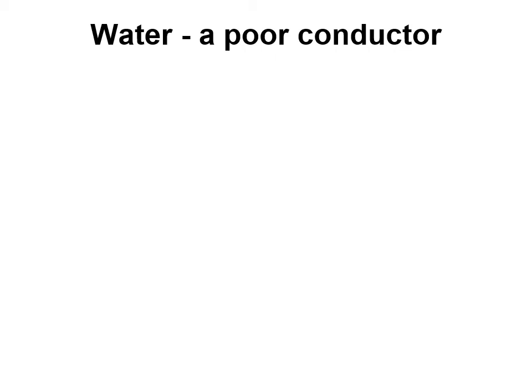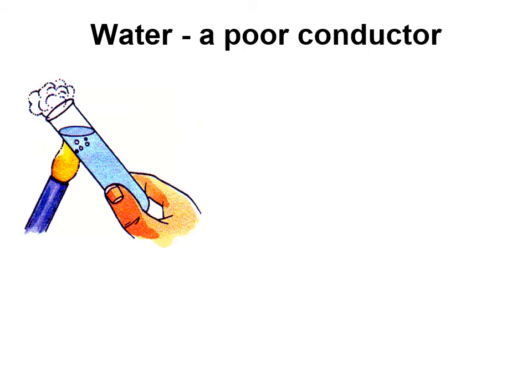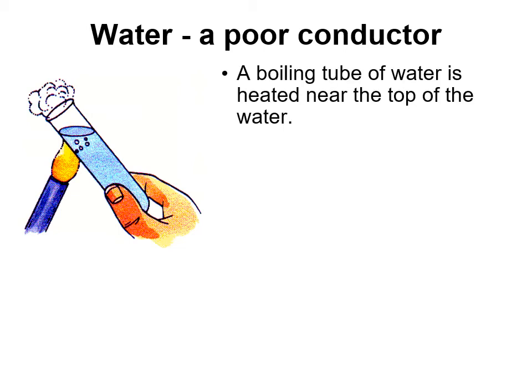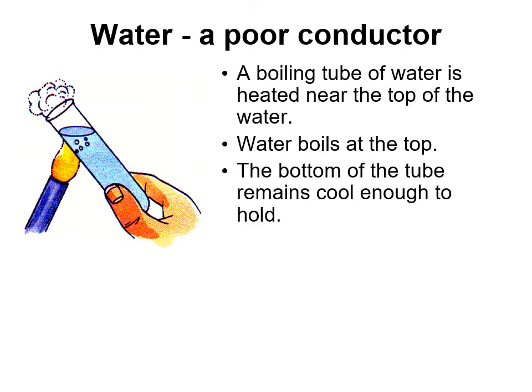Water is another example of a poor conductor and good insulator. You can demonstrate this by heating the top of a boiling tube full of water with a Bunsen burner — the water at the top will start to boil and release vapor, but you can still hold the bottom of the tube because both glass and water are very poor conductors of heat. If you did the same with a metal tube, you would not be able to hold it for long, because metal conducts heat very quickly.